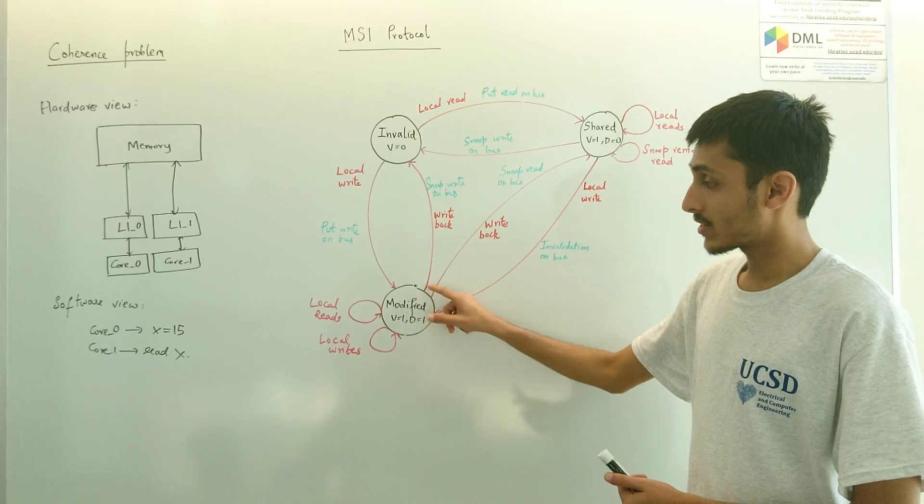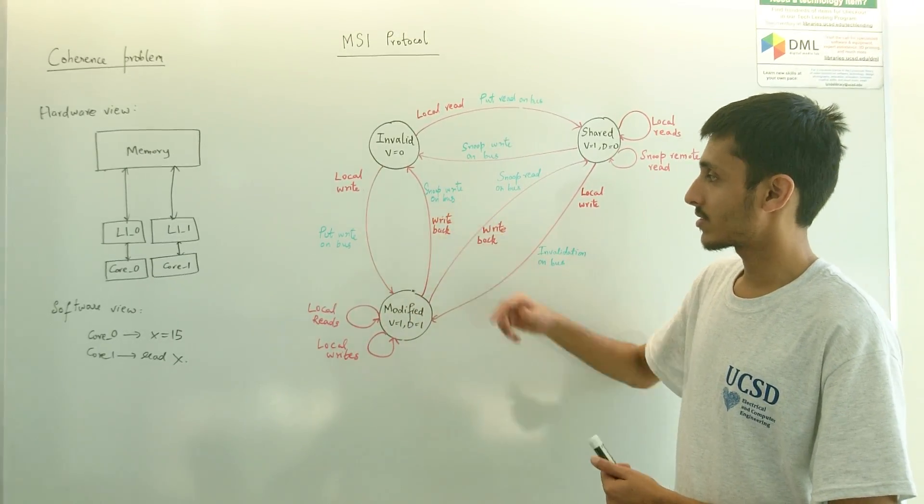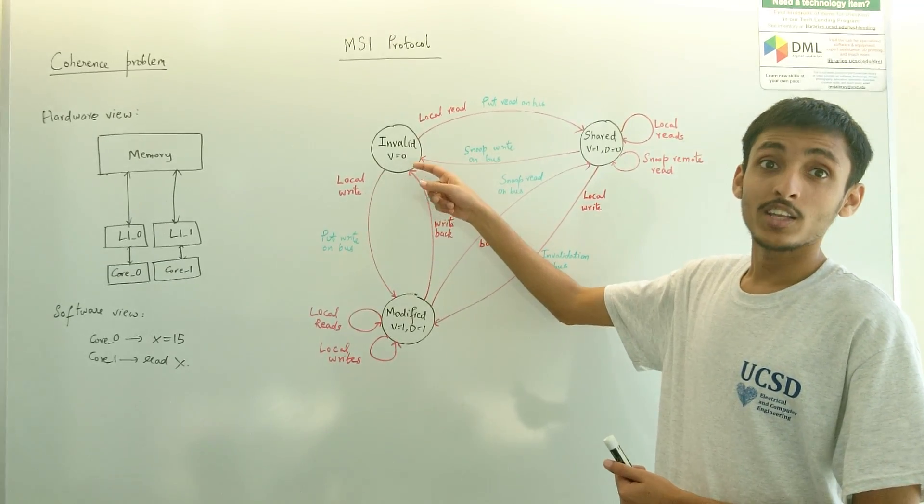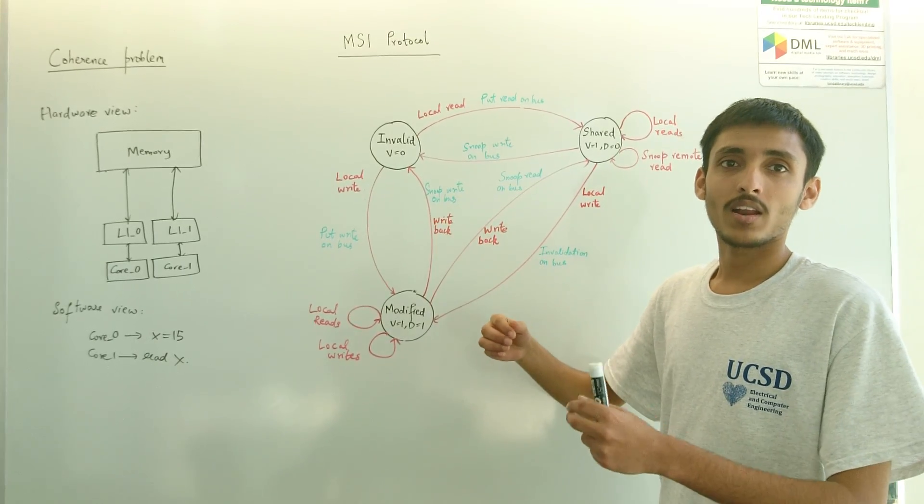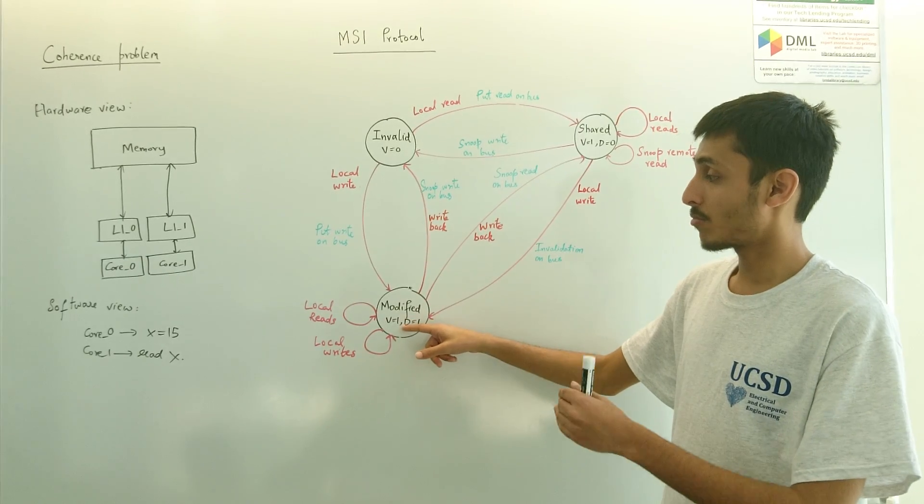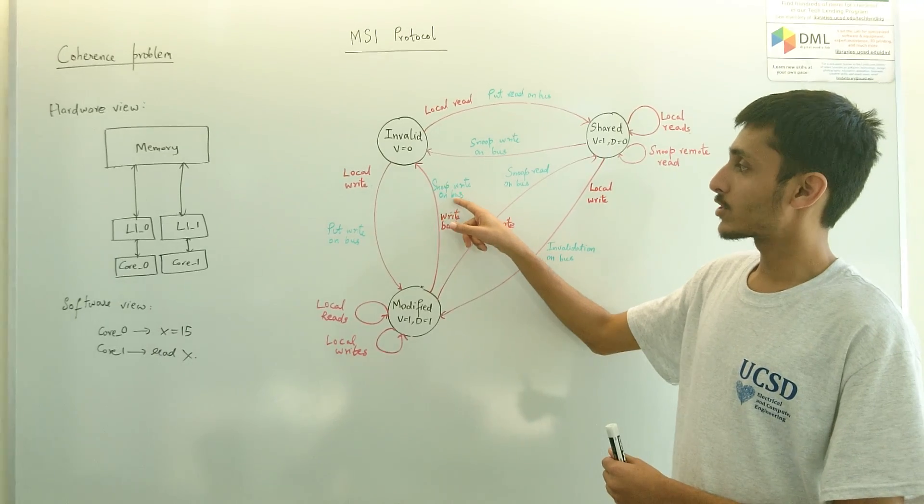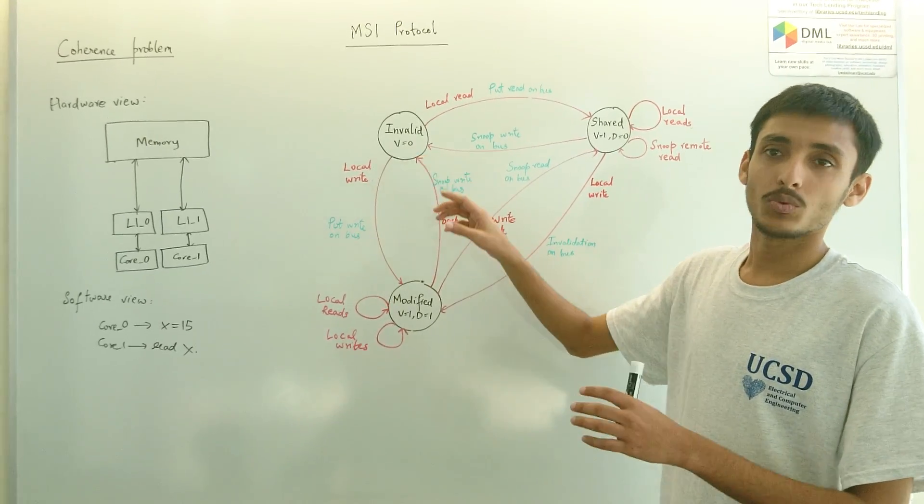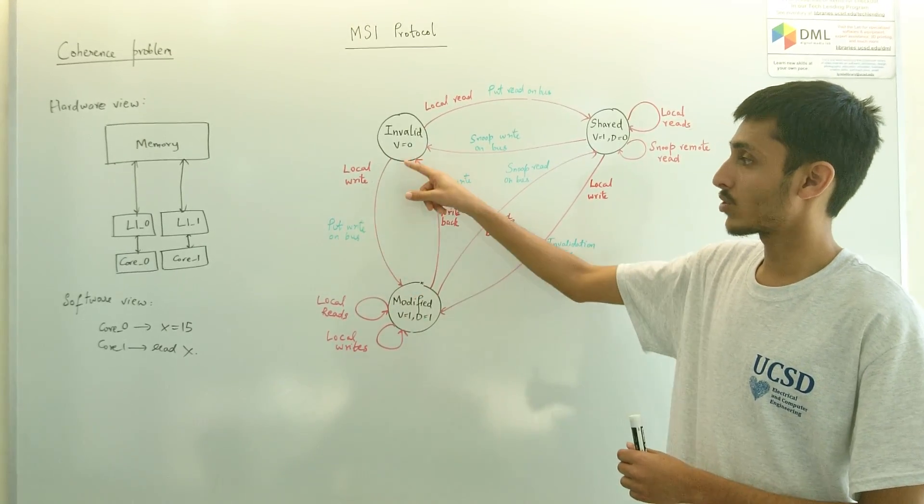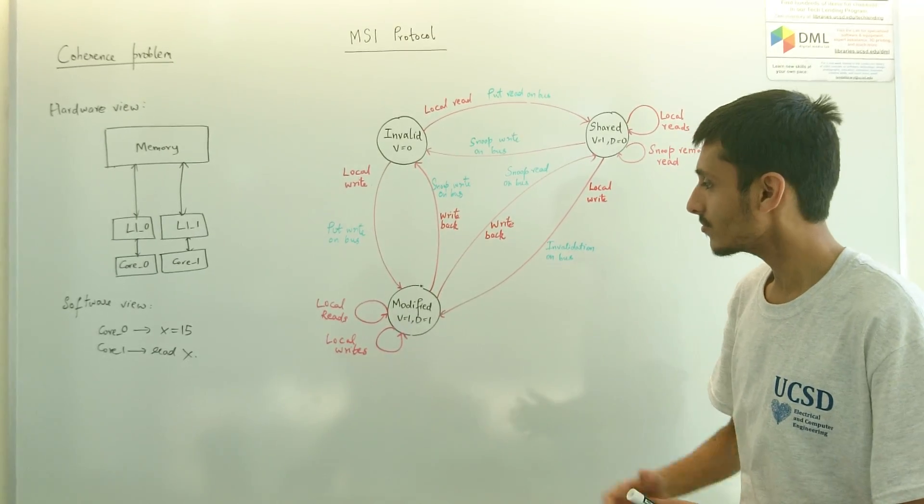However, all other lines that were in modified state at this time would basically snoop a write on the bus. This triggers a write back because the invalid line needs to pull the fresh line and not the line that was stale in the memory. This is done by ensuring all the processor in the modified state would move its data back to the memory when it snoops a write, and then the write would go through, which would ensure that this line is now in invalid state and only one line, which was the one doing the local write, gets the valid state, which is also dirty.